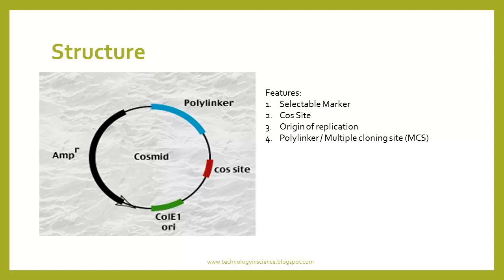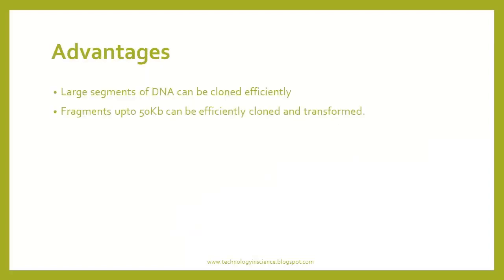The COS site is the region derived from lambda phage and helps in packaging of the vector. Cosmids are created because plasmids have a limitation in cloning large DNA fragments — the efficiency of transformation drastically reduces as size increases. Cosmids overcome this, allowing us to clone large fragments of DNA.